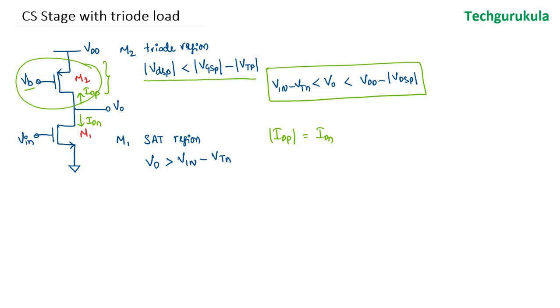The output voltage swing range is going to be a bit high for this kind of triode load common source stage because the voltage headroom taken by the PMOS is less because it is operating in triode region. In fact, voltage swing is basically the range within which the output signal can change without making the transistors go into unintended region of operation.